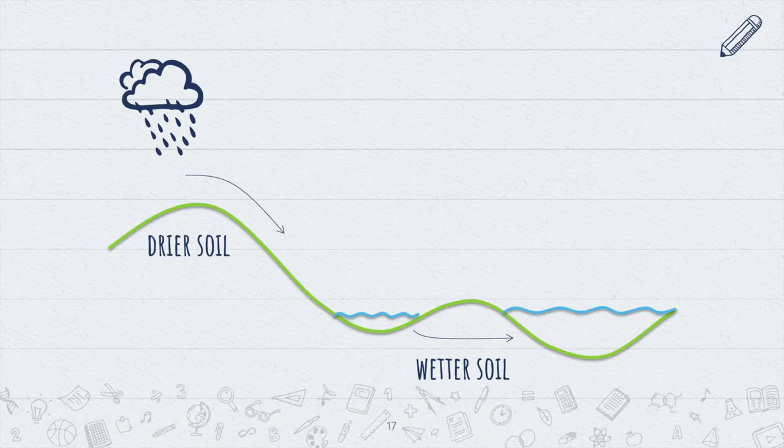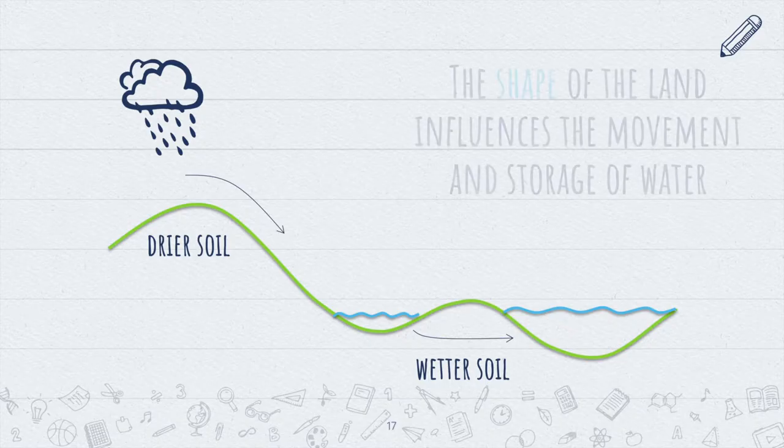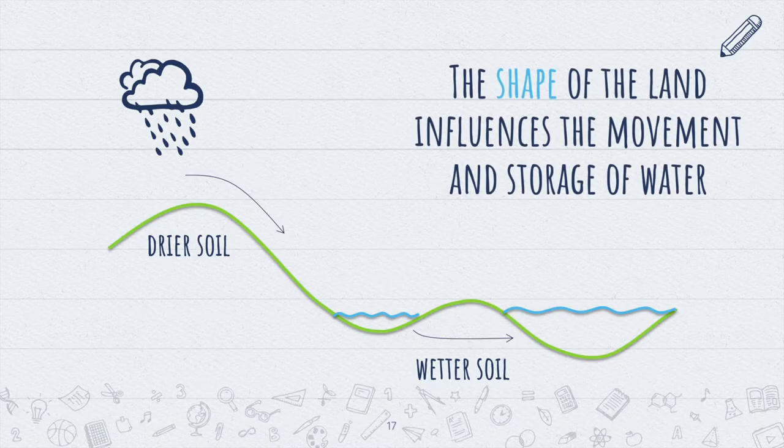Slope — thinking about slope, the shape of the land influences the movement and storage of water. The types of soil that form on the highlands are different than the soils that form in the lowlands because of this natural flow.